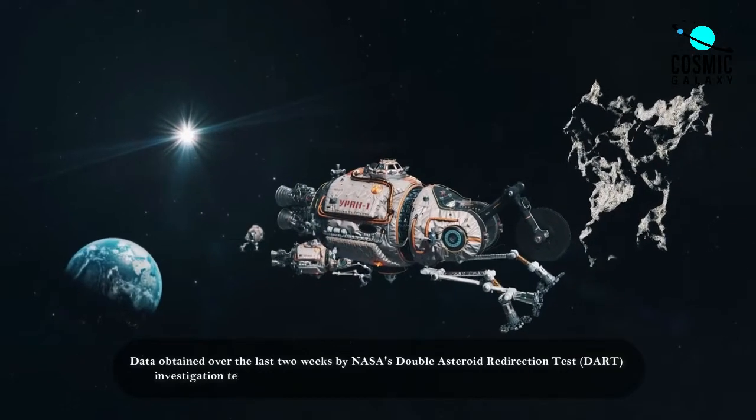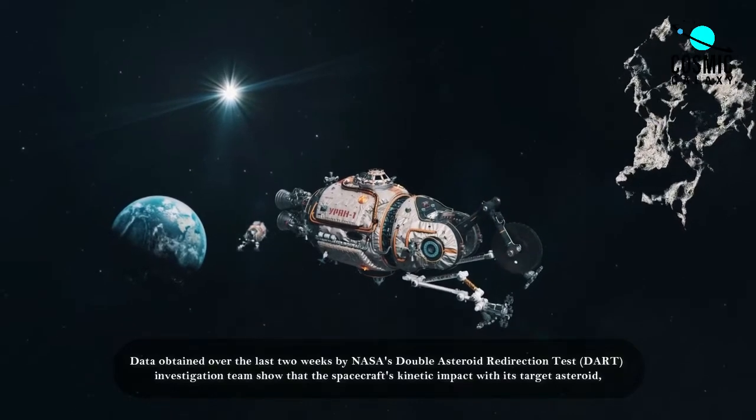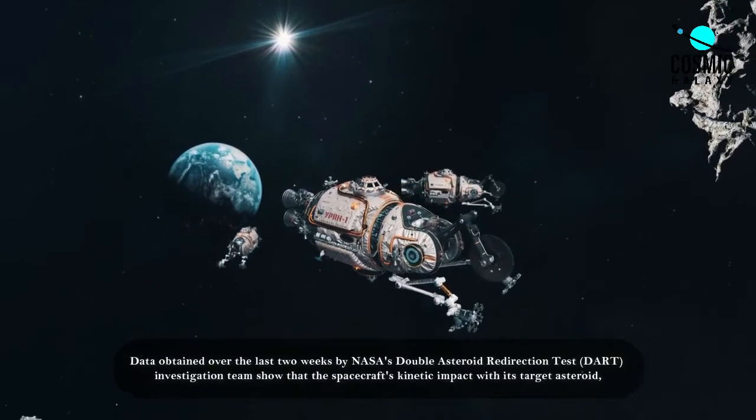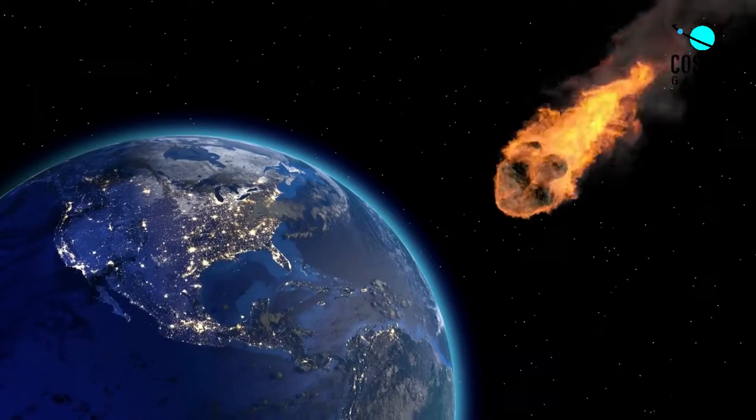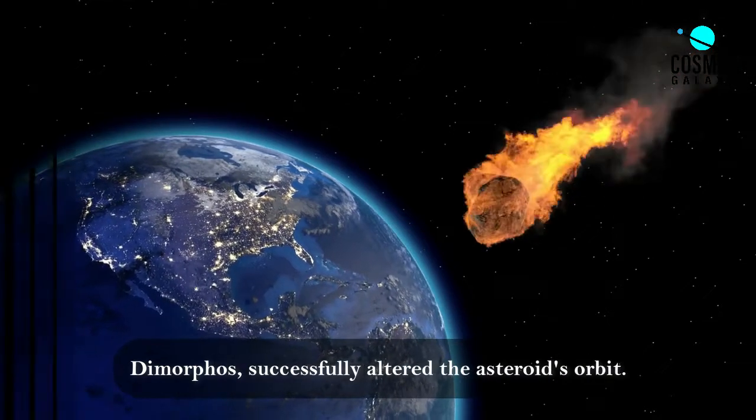Data obtained over the last two weeks by NASA's double asteroid redirection test DART investigation team shows that the spacecraft's kinetic impact with its target asteroid Dimorphos successfully altered the asteroid's orbit.